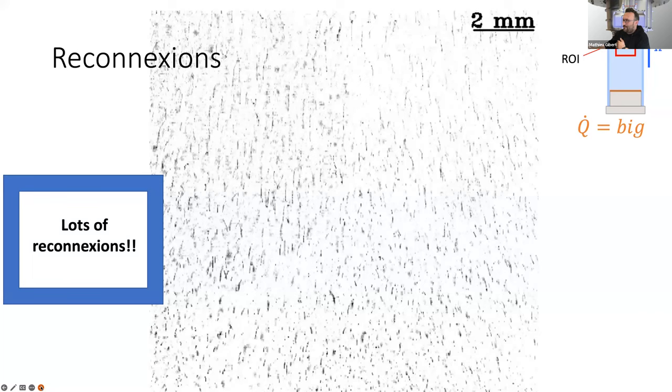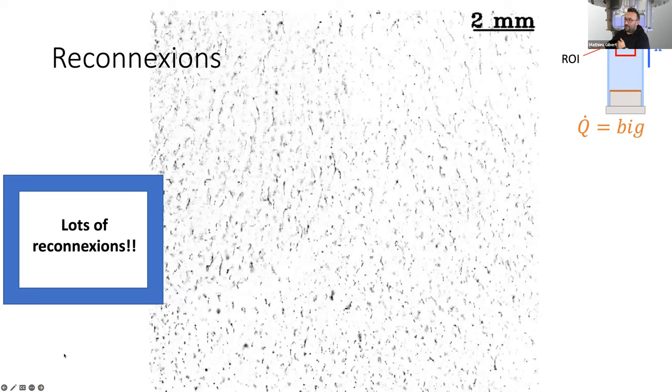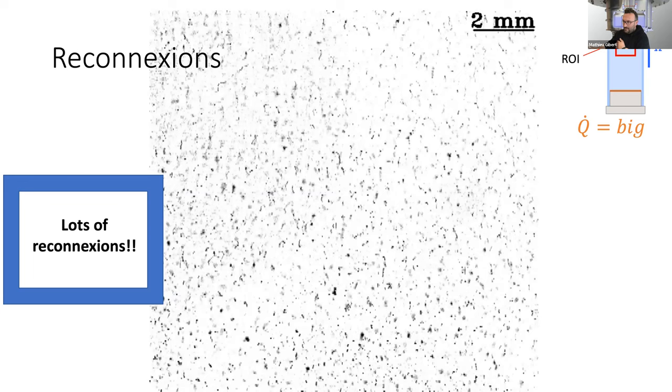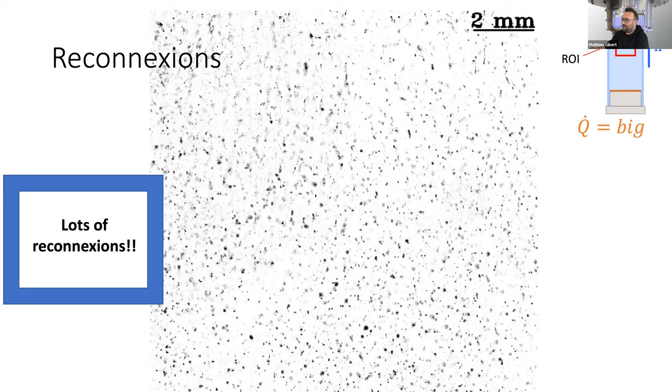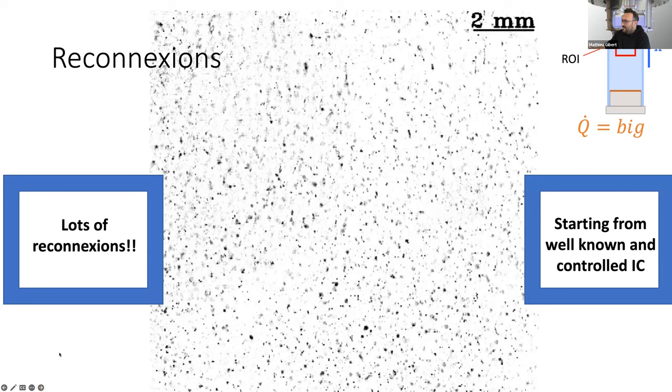I confess to you that it's not easy to identify on this movie single reconnection events, but there are plenty, that's for sure, and most likely with a nicer camera that is hopefully coming soon, we'll be able to resolve this dynamic nicely. Here you have seen lots of reconnection, which are, if you look at the literature, of course quantum vortex reconnections have been studied. But here, there are really plenty, and most interestingly, we start from a well-known and controlled initial condition, and we can trigger when and why these reconnections happen. Hopefully we will be able to bring some more experimental results on this question.